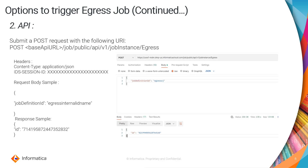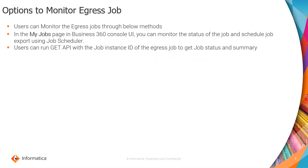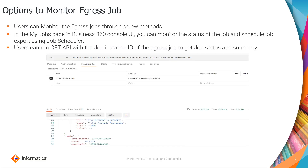To monitor the job — if you kicked it off via API, there is also an API for monitoring where you pass the job instance ID and session ID, and that will tell you whether the job completed or not. Obviously the other method is through the B360 UI console as well.